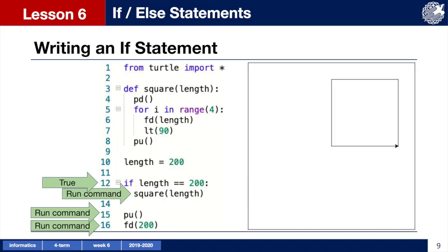Let's look at this sample code. We have a variable length with a value of 200. My if statement is using the condition length is equal to 200, which is true. So the turtle will follow the commands indented below and draw a square. Once this command is complete, our turtle then moves on to the next commands where it lifts the pen up and moves forward for 200 pixels.